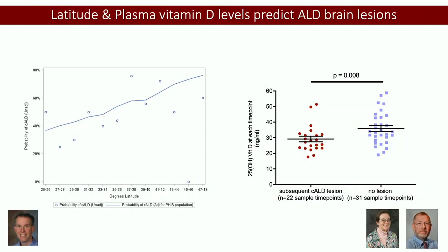We looked at the same features in ALD. Dr. Bronkowski looked at a dataset from children all over the US and found that latitude predicted the incidence of cerebral ALD. Jerry Raymond, Moser, and I had looked at vitamin D levels in kids before they had brain lesions and found that kids who later developed brain lesions had lower levels of vitamin D, and those with higher levels had a lower risk — at least in this population.